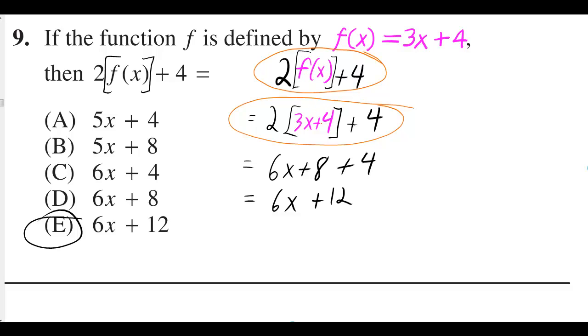We substitute f(x) with 3x + 4, then distribute the 2 to the 3x and the 2 to the 4 to get 6x + 8. We still have the plus 4, so we get 6x + 12.